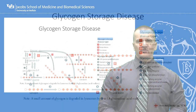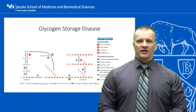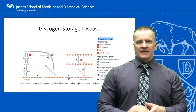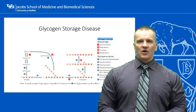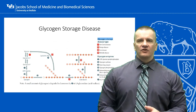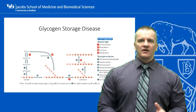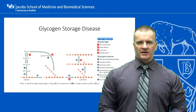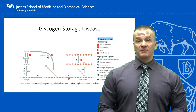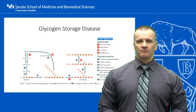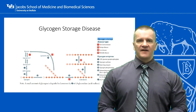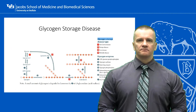That concludes our discussion of the glycogen storage diseases. In the next session, we will switch gears and look at the other major energy source for the body, lipid metabolism. These are known as the fatty acid oxidation myopathies.